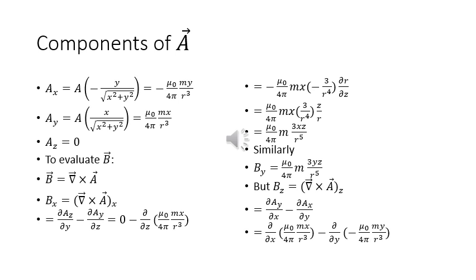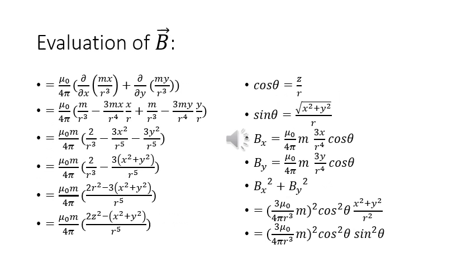Similarly, By = μ₀m · 3yz / (4π r⁵). Bz, the z-component of curl A, is given by ∂Ay/∂x − ∂Ax/∂y, which equals ∂/∂x (μ₀mx / 4πr³) minus ∂/∂y (−μ₀my / 4πr³). So we carry out the evaluation of Bz as follows.